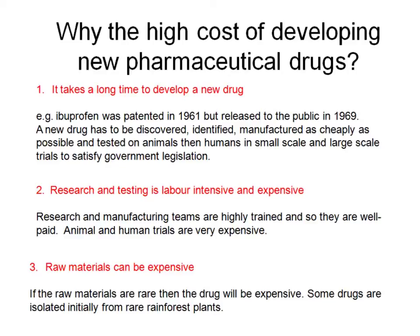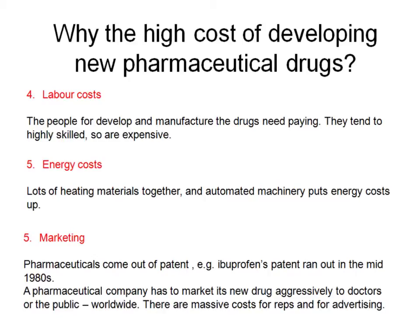Raw materials can be expensive — they might be plants from the rainforest which have to be collected and transported before they can be manufactured. Labour costs are also very high because the people who design and research new drugs are often highly paid with doctorates. Ongoing costs include energy, heating, automated machinery and so on. Finally, marketing is expensive because pharmaceuticals come out of patent after only a few years, so a company has to maximise revenue before others can manufacture it — requiring heavy marketing to doctors and the general public.